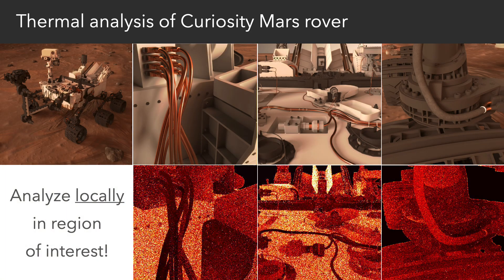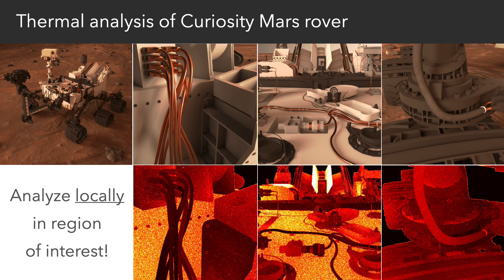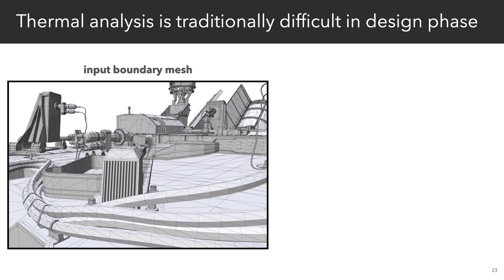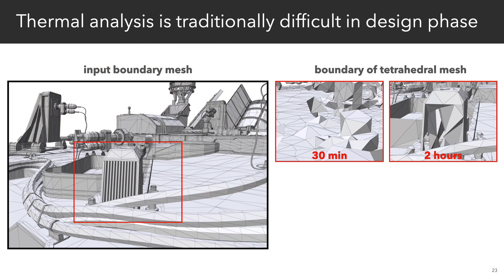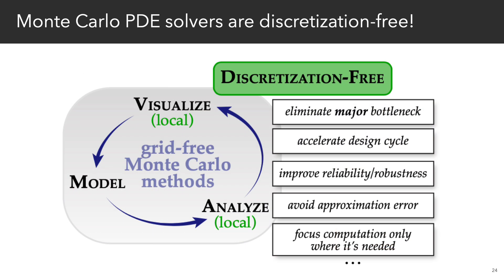Like rendering, we can analyze temperatures in local regions of interest without computing a global solution. In contrast, finite element meshing completely destroys the surface detail on the Mars rover if we try to tetrahedralize this model, and even if we allocate more processing time, we regularly run out of memory. Our approach eliminates these bottlenecks and demonstrates how physical simulation can be made more like rendering in terms of progressive and view-dependent feedback.